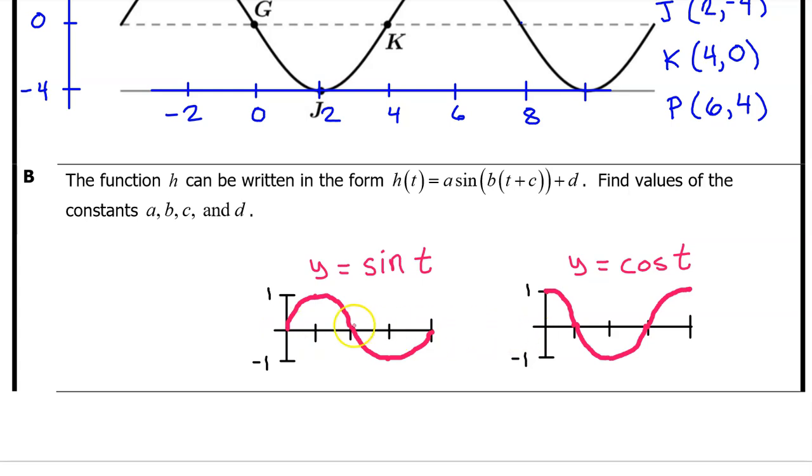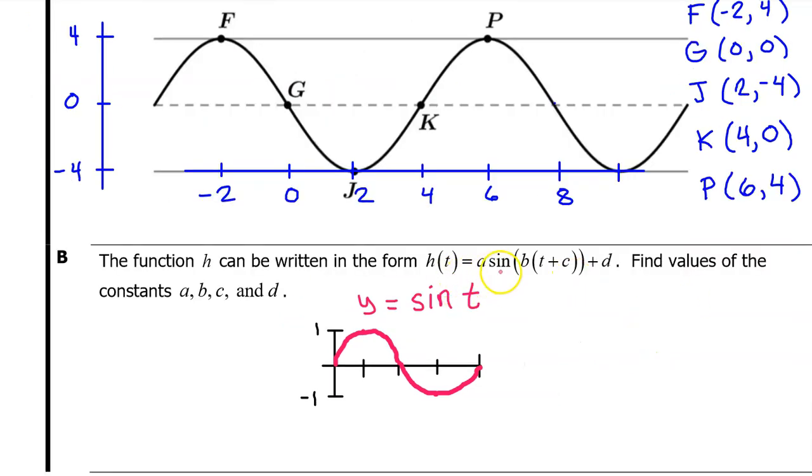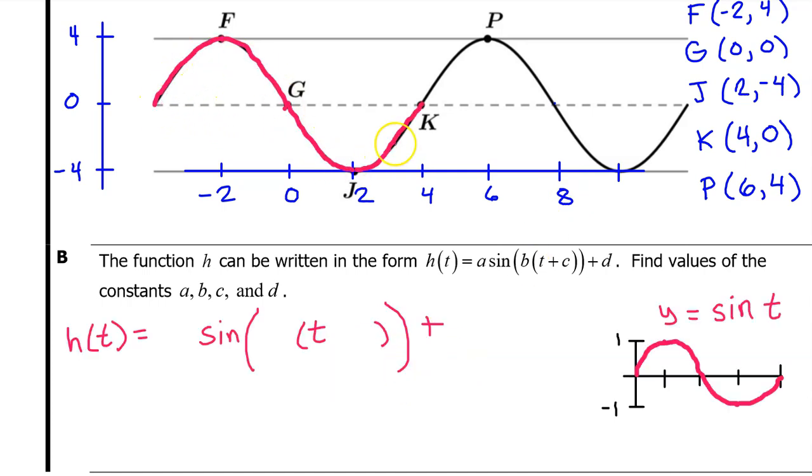I want you to memorize what the parent functions look like for Y equals sine T and Y equals cosine T. Notice that for sine T, it starts at the midline and then goes up and down and back. Whereas cosine T starts at its maximum value and then goes down and back up. H of T is sine T after four transformations. So let's highlight a part of the graph that looks like this. Let's use this period of the graph to build a model of H of T, filling in the values of A, B, C, and D as we go along. Each one of these letters represents a transformation of the parent function sine T.